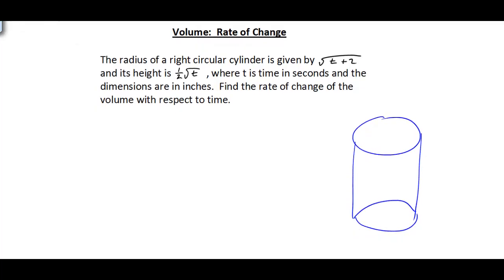The radius is given by the square root of t plus 2, and the height is one half the square root of t. t is the time in seconds and our dimensions are in inches.